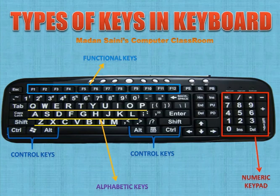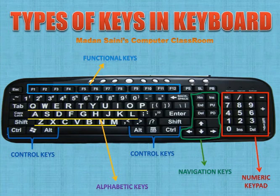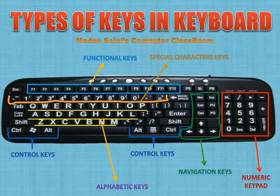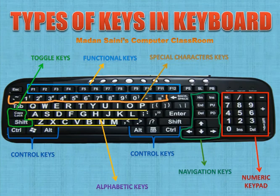Fifth, navigation keys — Home, Insert, Page Up, Page Down, and Delete, along with cursor control keys. Sixth, numeric keys with special character keys — these are used to type special characters with the help of the Shift key. Seventh, toggle keys — Caps Lock, Shift, and Num Lock. These act as switches between two tasks; for example, Caps Lock switches between small letter and capital letter typing.